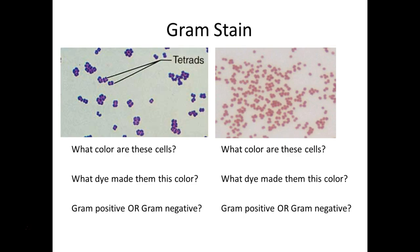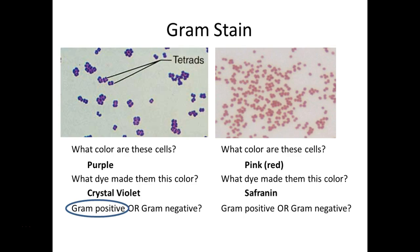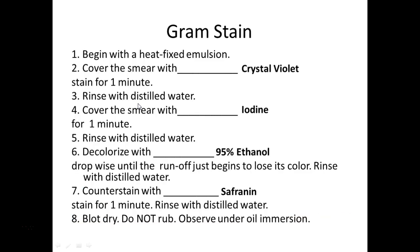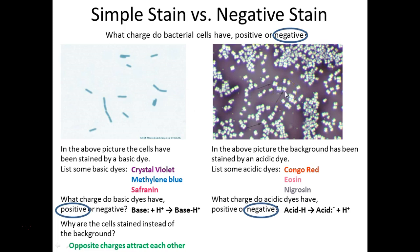Looking at the gram stain: what color are those cells in this first picture? They're purple. What dye made them that color? Crystal violet. So we say they're gram positive because they stayed purple. The pink — which is a lighter shade of red — what stain is that? Congo red is an acidic dye that stains the background. Our other red dye is safranin, so those cells are gram negative. What shape are those cells? The individual shape is cocci, but the arrangement is tetrads — a group of four.